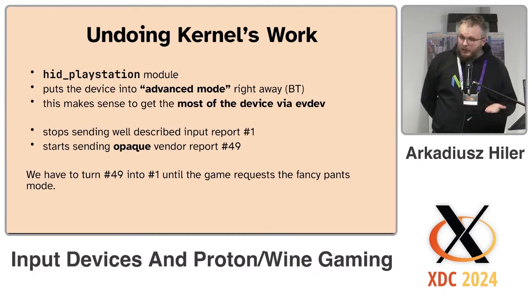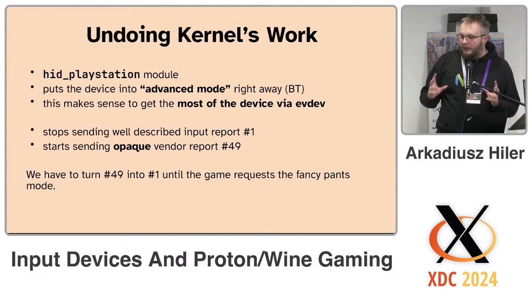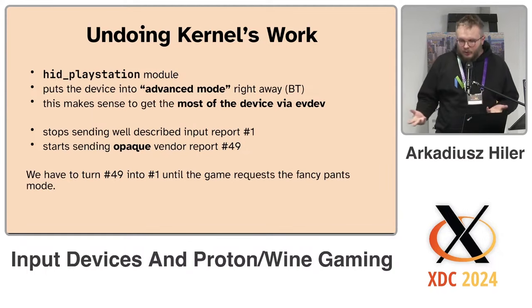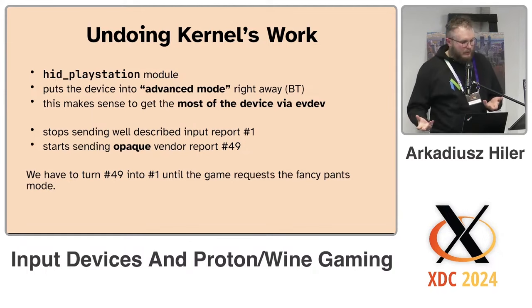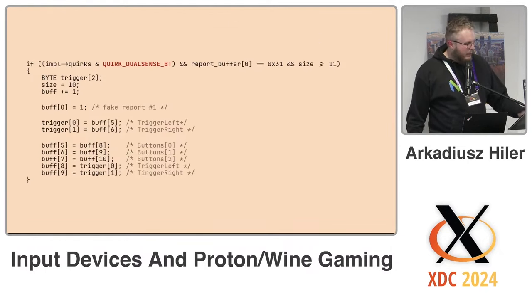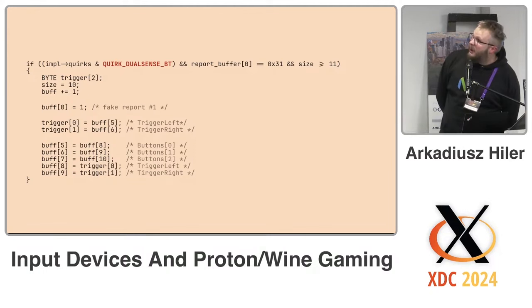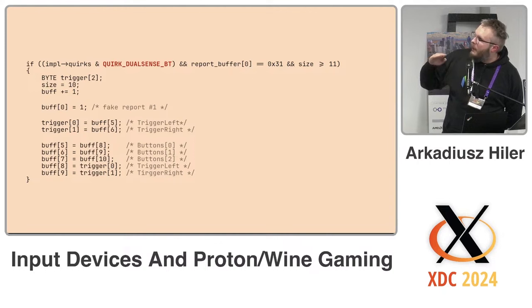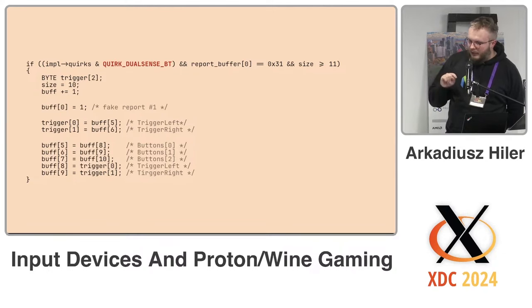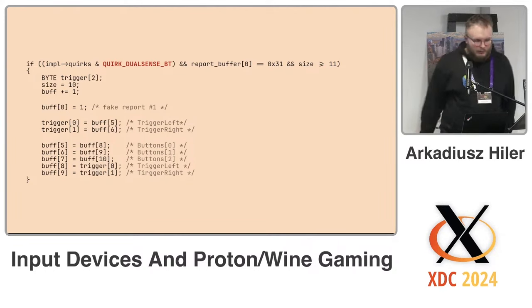It makes sense for Linux because the device is exposed by evdev and it also has gyros and a touchpad, so those are exposed as different devices. But we don't want that when a game accesses this directly. So we have to trim the input report down to 10 bytes and shuffle a few bits around, because it cannot be fully consistent with input report number one — it's mostly consistent, but a few fields are shuffled for whatever reason.